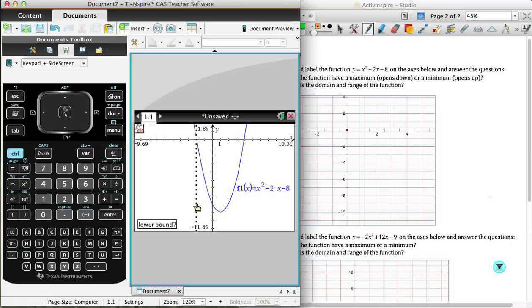I'm going to go to the left, hit enter, slide across to the right of that point, hit enter. And there we see I have the coordinates of my minimum, which is 1 minus 9.